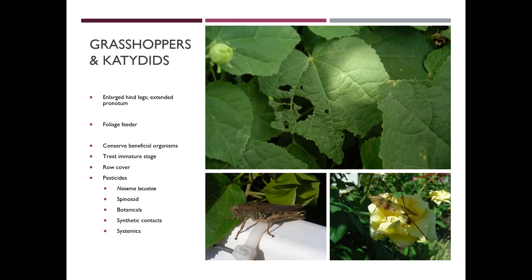Those insects that are first out of the egg are tiny — they have tiny mandibles, so they're only going to eat the really tender parts of the plant. A lot of times they'll just eat the surface of the foliage, and you get this stained glass or window painting effect on the plant. When you start getting into medium-sized insects, they're going to start chewing holes in the plant.